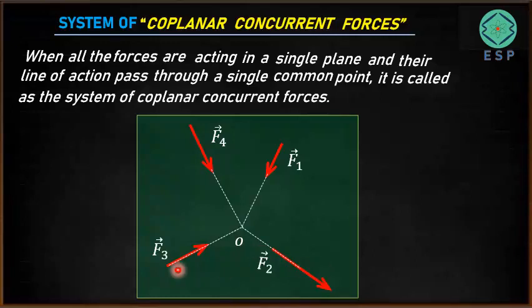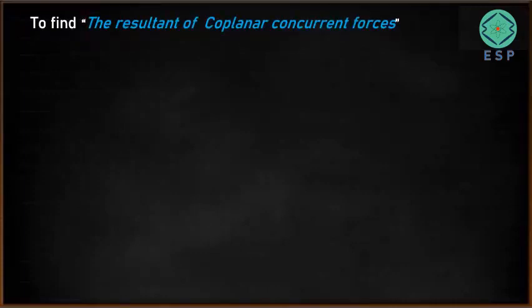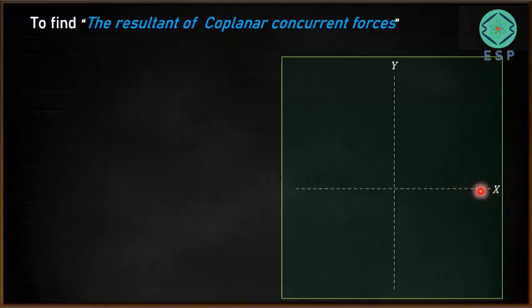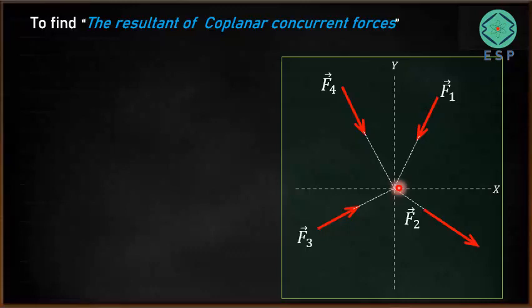When all the forces are in the same plane and their line of action is passing through the same common point, it is called as a system of coplanar concurrent forces. Now let's understand how to find the resultant of coplanar concurrent forces with the help of an example. We have an XY plane and in this plane we have forces F1, F2, F3, and F4 with their line of action passing through a single common point O.